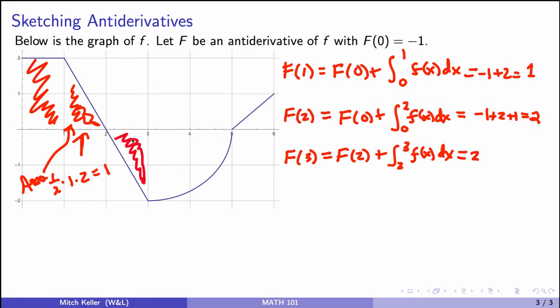Well, now we're doing net signed areas. So we're going to get a negative contribution here. The area of this triangle is, again, a half times the base is 1 times the height is 2. So the area of that triangle is 1, but we get a negative contribution to our net signed area. So f of 3 is 1.